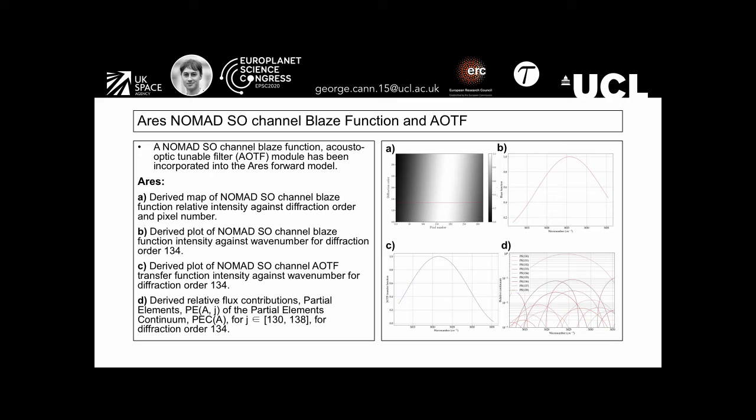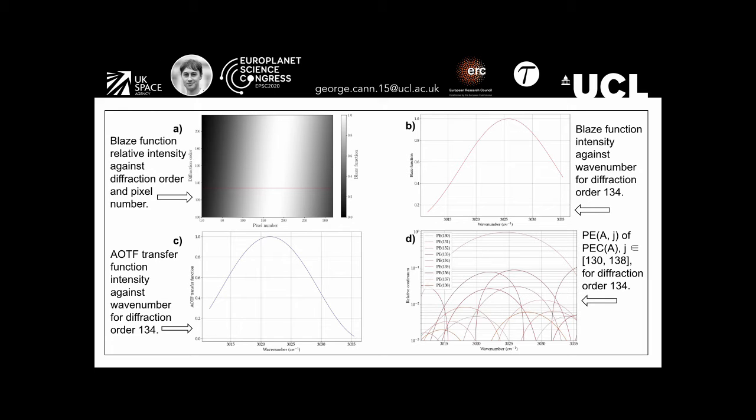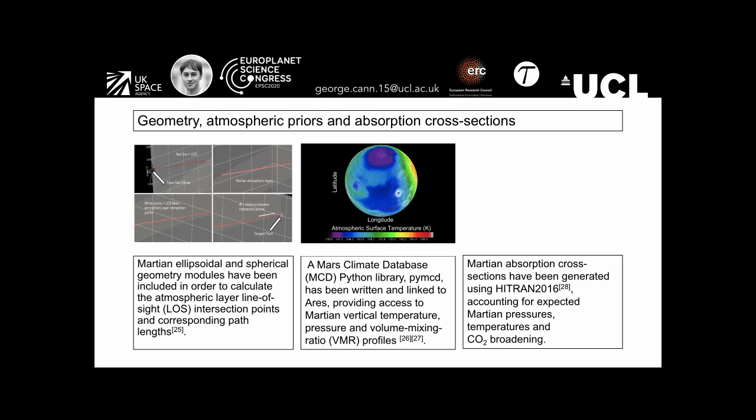The red line corresponds to diagram B, a derived plot of blaze function intensity against wave number, in particular for diffraction order 134. C shows a derived plot of the acousto-optical tunable filter. D shows the relative flux contributions of the partial elements continuum for orders 130 to 138. Here is a zoomed-in version of the plots shown in the previous slide.